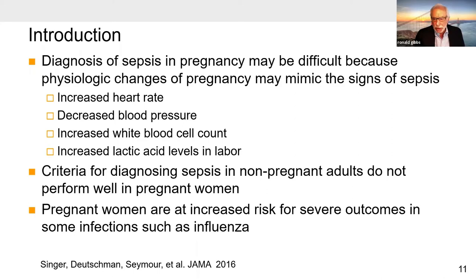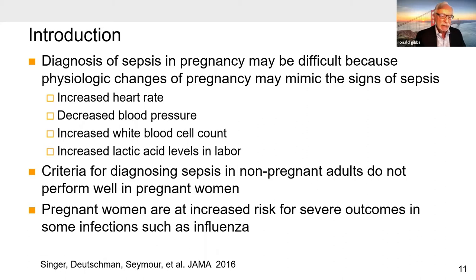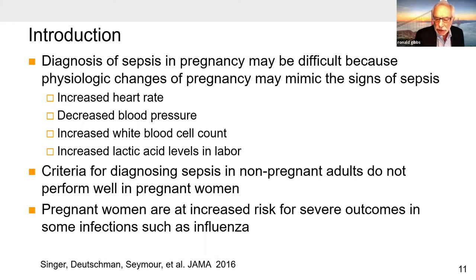The diagnosis of sepsis in pregnancy may be difficult — more difficult than in all adults — because the physiologic changes of pregnancy may mimic the very signs of sepsis. Pregnant women have an increased heart rate, decreased blood pressure particularly in the second trimester, an increased white blood cell count particularly in labor, and increased lactic acid levels in labor. Therefore, the criteria for diagnosing sepsis in non-pregnant women do not perform well among pregnant women. We also know that pregnant women are at increased risk for severe outcomes in some infections, such as influenza, and now we should add COVID-19.